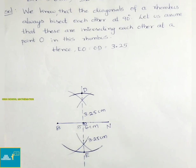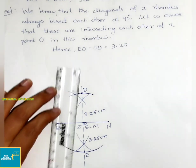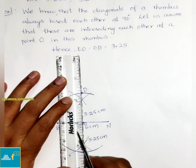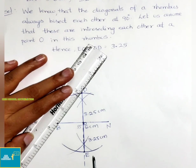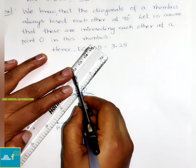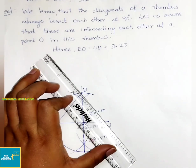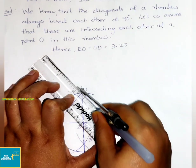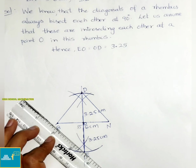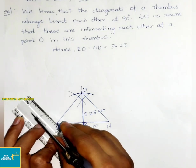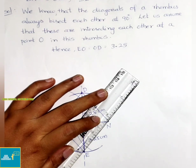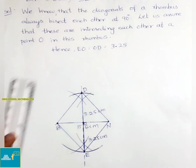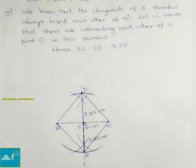Now join the points. First join DE, then join BD, then DN, then join BE and EN. Therefore BEND is the required quadrilateral.